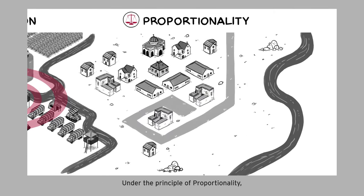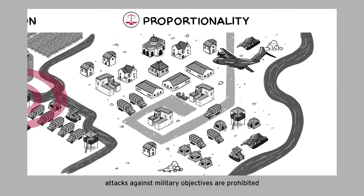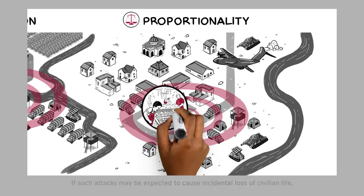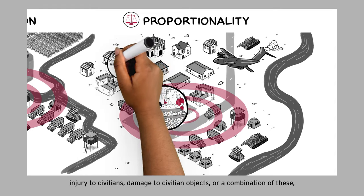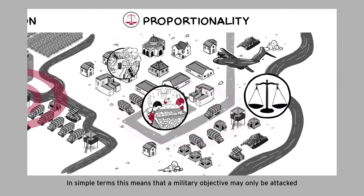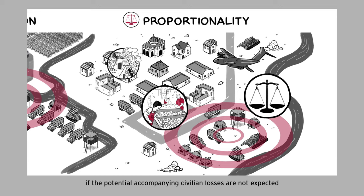Under the principle of proportionality, attacks against military objectives are prohibited if such attacks may be expected to cause incidental loss of civilian life, injury to civilians, damage to civilian objects, or a combination of these, which would be excessive in relation to the concrete and direct military advantage anticipated. In simple terms, this means that a military objective may only be attacked if the potential accompanying civilian losses are not expected to outweigh the foreseen military advantage.